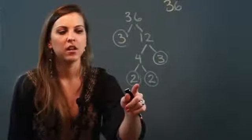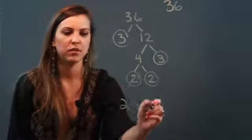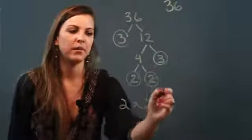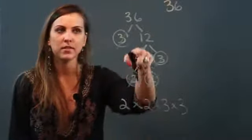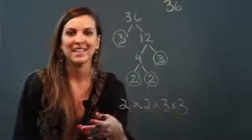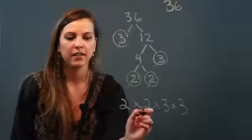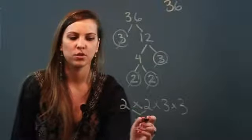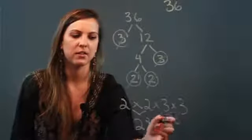I can go ahead and write it out as a prime factorization. So I have 2 times 2 times 3 times 3. So my prime factorization of 36 is 2 times 2 times 3 times 3 in standard form. And if I wanted to write in exponential form, I take this 2 times 2 and I rewrite it as 2 squared, and I take my 3 times 3 and I rewrite it as 3 squared, and that's the prime factorization.